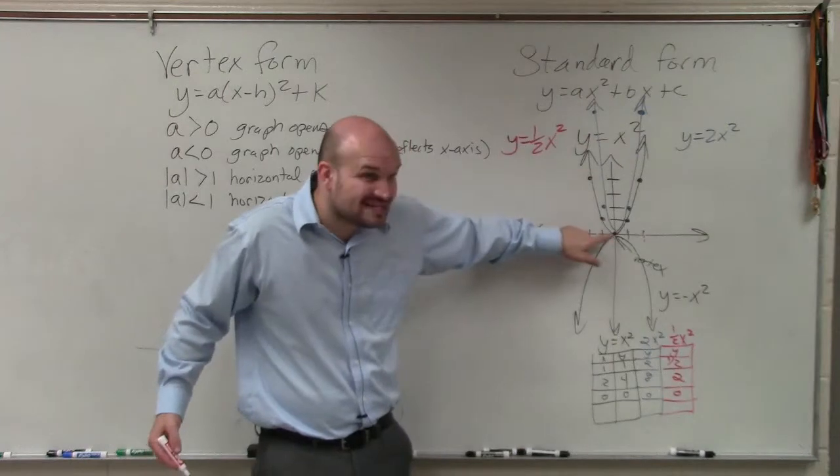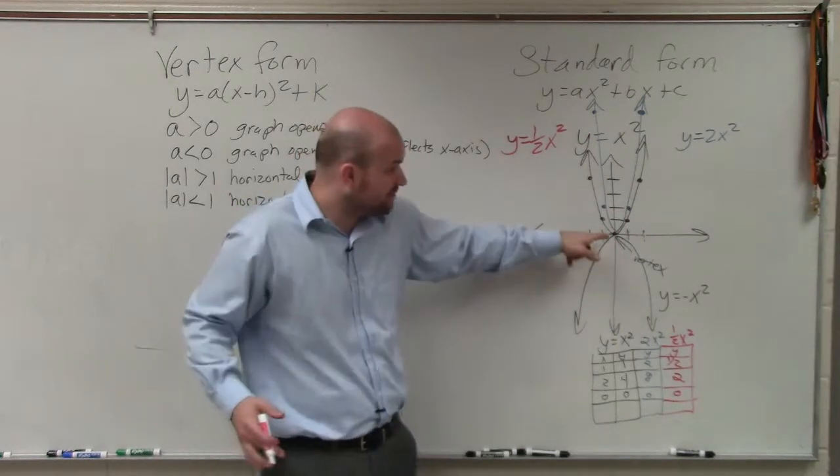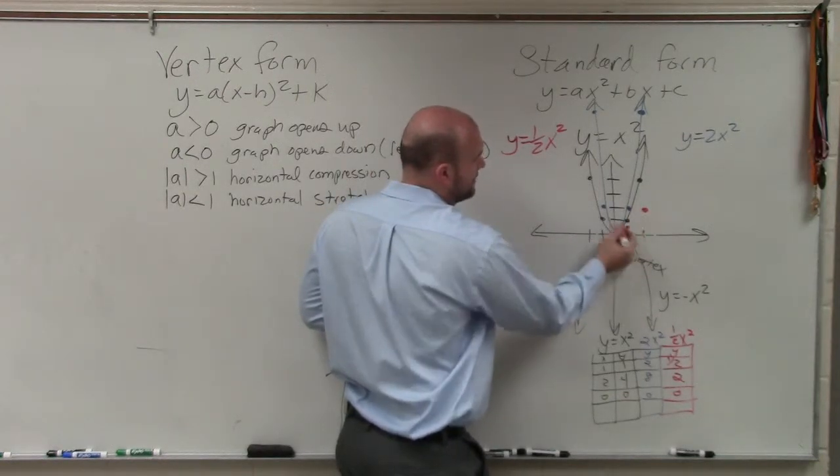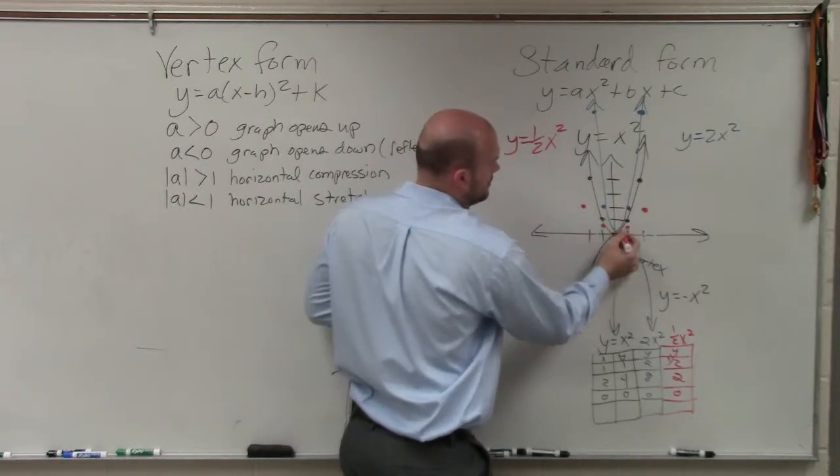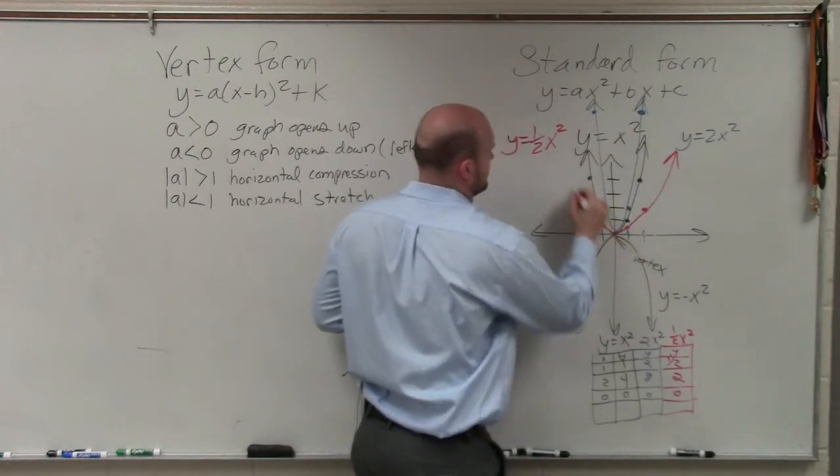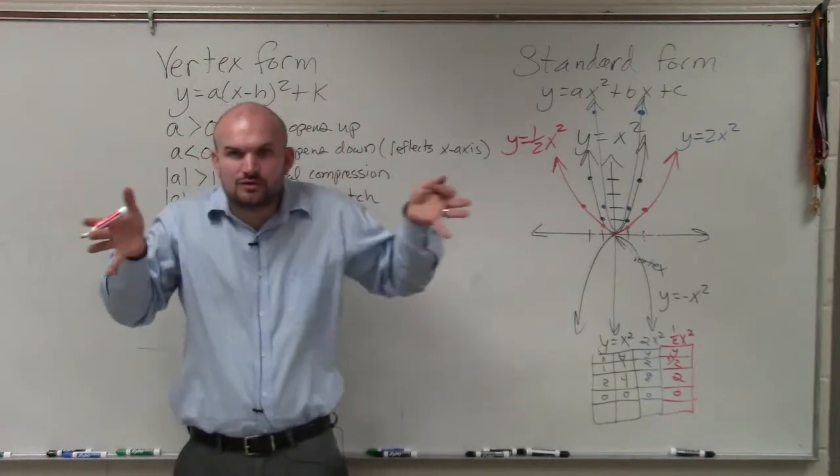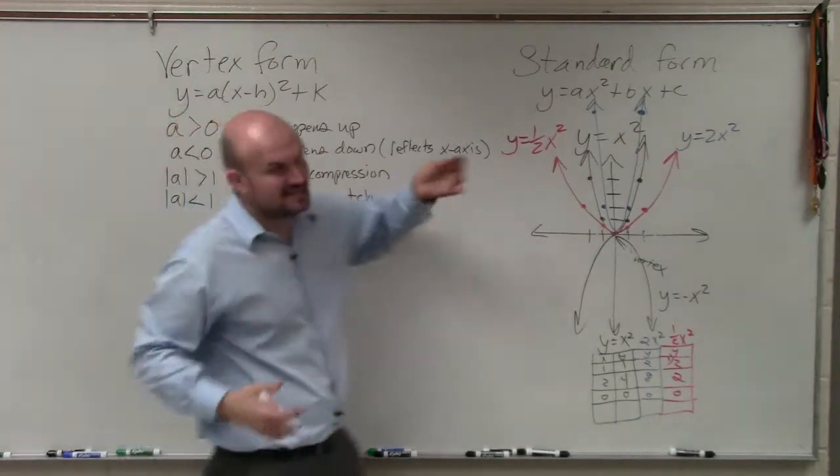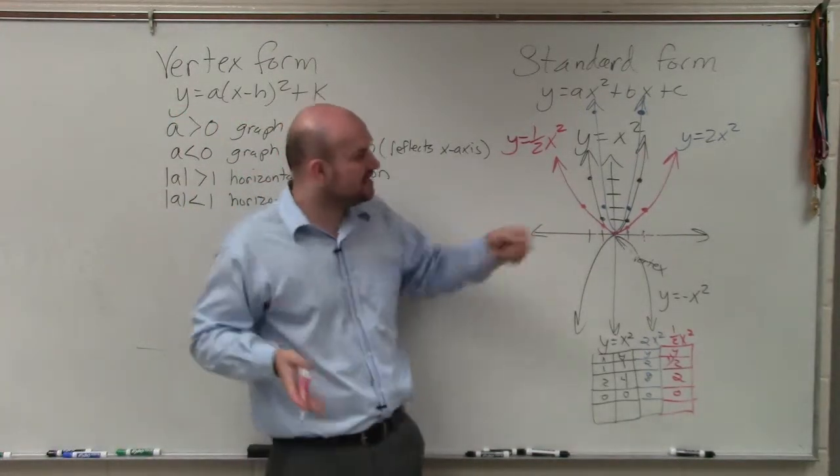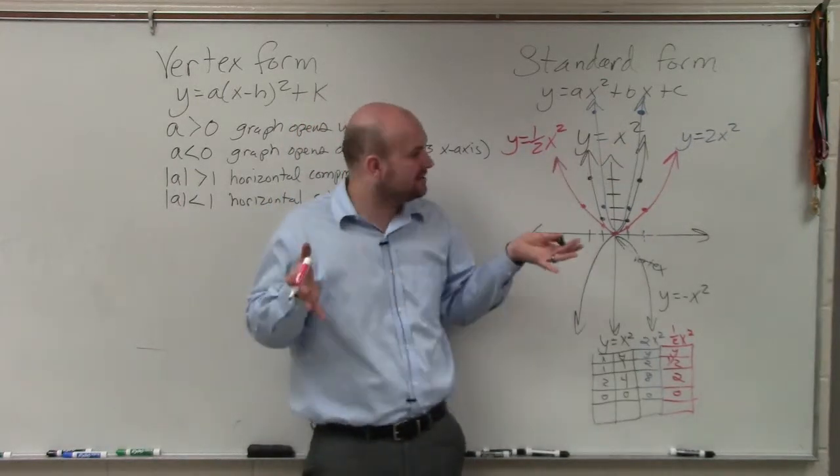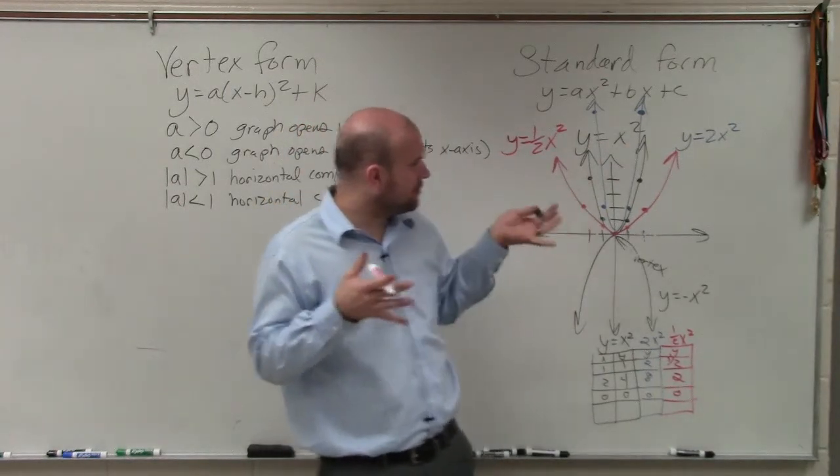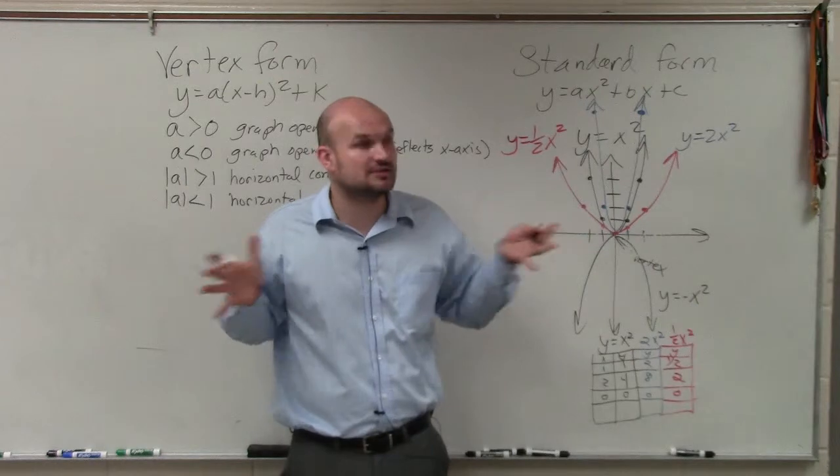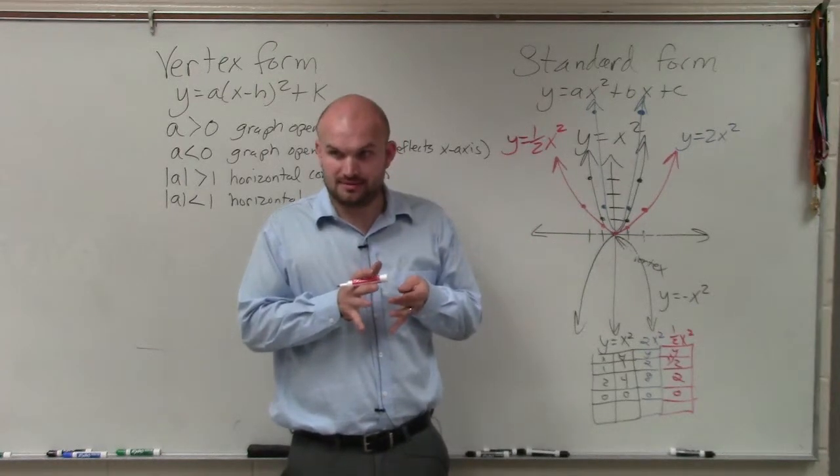So again, notice the vertex is still the same, right? This graph is not moving anywhere. The vertex is still the same, but now, as I go over 1, I only go up to 1 half. As I go over 2, I go up 2. And if I reflect these, you guys can see now, my graph is being stretched horizontally. So what a does is it doesn't move the graph left or right at all. All it does is affect the kind of, it doesn't affect the orientation. It just affects the shape of the graph. If it's opening up, opening down, or if it's being stretched or compressed. Does that make sense?